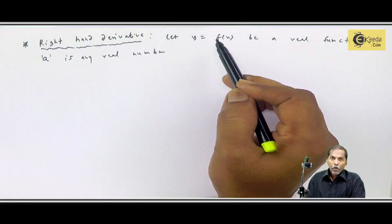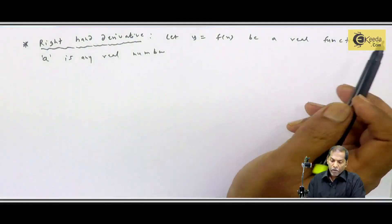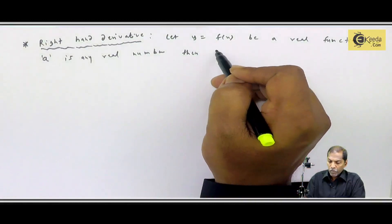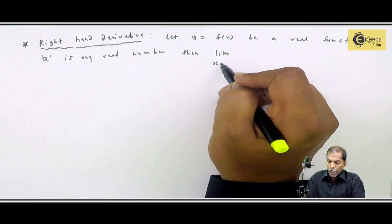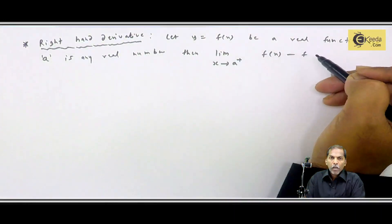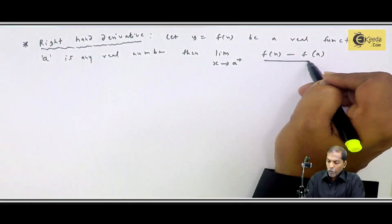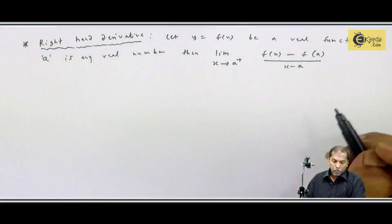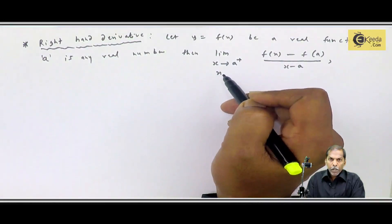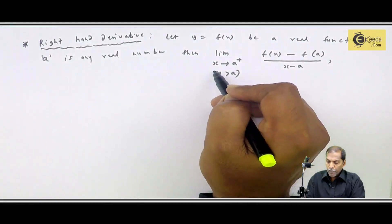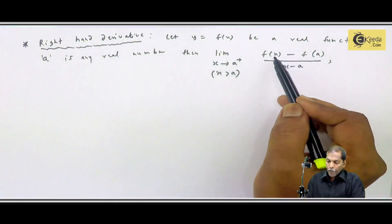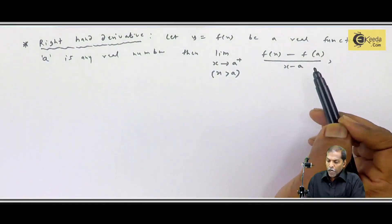Let y equal to f(x) be a real function and a is any real number. Then the limit as x tends to a-plus of f(x) minus f(a) upon x minus a.